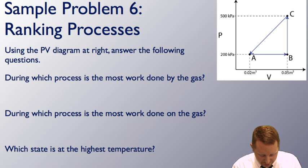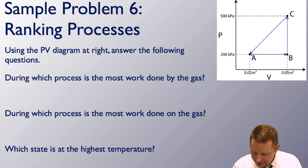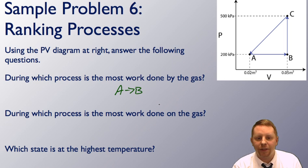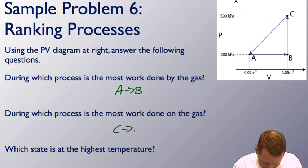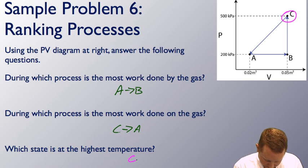Ranking processes using a PV diagram: during which process is the most work done by the gas? The gas does work when moving right on the volume axis, and the process with the most area there is A to B. During which process is the most work done on the gas? That's moving left on the volume axis, and the most area there is C to A. Which state is at the highest temperature? Temperature is highest furthest up and to the right, so that must be point C.